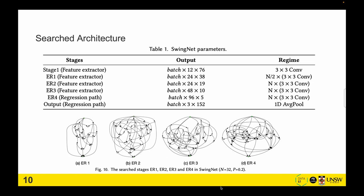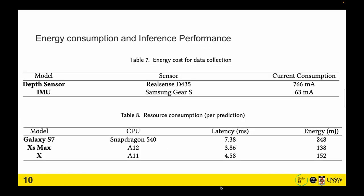And here is the searched architecture within the configuration of the model parameters and outputs. This is the energy cost of data collection using the depth sensor and IMU, and also the inference on mobile settings with three mobile phones. We see that they can run efficiently and collect data efficiently, so it is suitable for mobile settings.